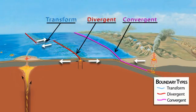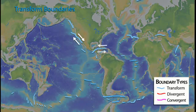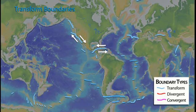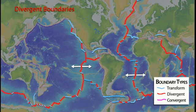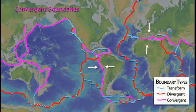Relative motion between plates can be broadly grouped into three main categories: transform, divergent, and convergent. Returning to the world map view, transform or strike-slip boundaries are places where plates move horizontally against each other. Divergent or constructive boundaries are places where plates move apart from one another. And places where plates press into one another are called convergent or destructive boundaries.